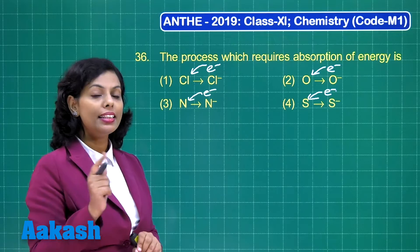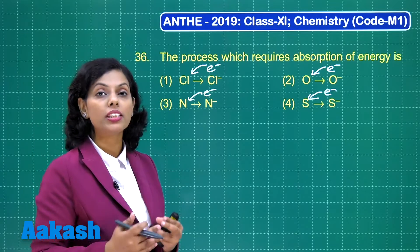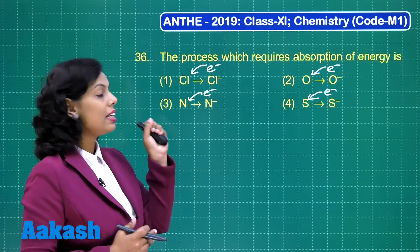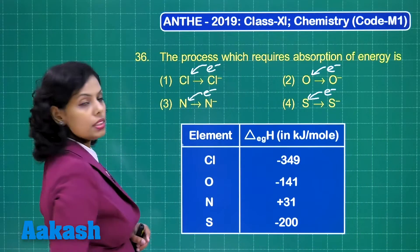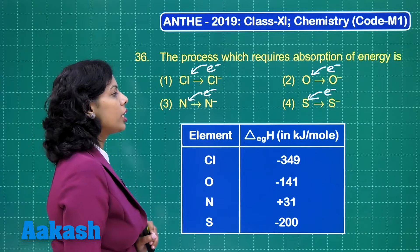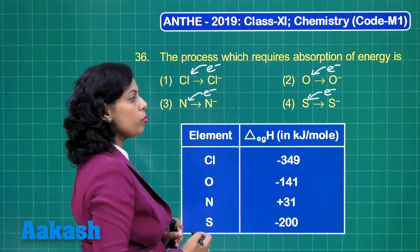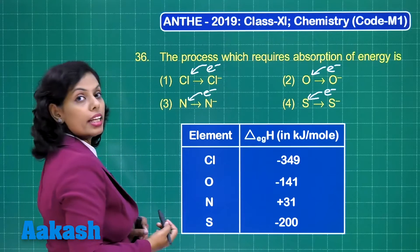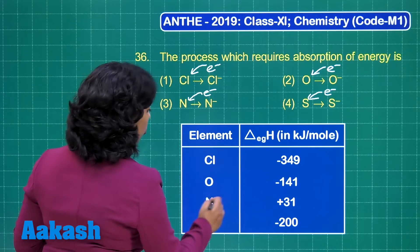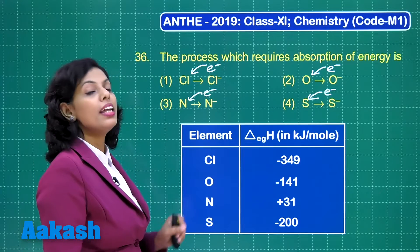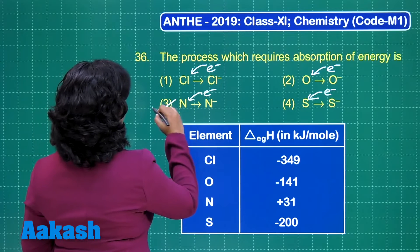Nitrogen has a half-filled electronic configuration — 2s² 2p³ — and gaining one more electron is not a favorable process, so absorption of energy takes place. Looking at the table: chlorine has −349 kJ/mol, oxygen and sulfur also show negative electron gain enthalpy, but nitrogen shows a positive value, representing absorption of energy. Therefore the correct answer is option 3.